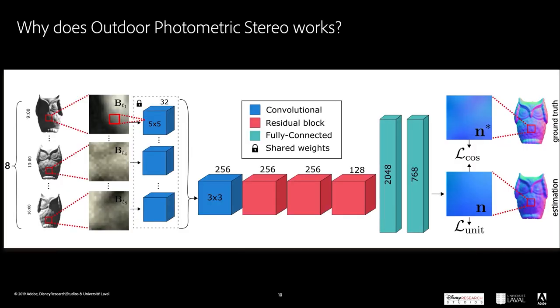To perform this, we use a neural network which takes as input 8 patches of images lit throughout the day and estimates all normals within the patch. We repeat the operation for all patches in the image to obtain a full surface reconstruction.